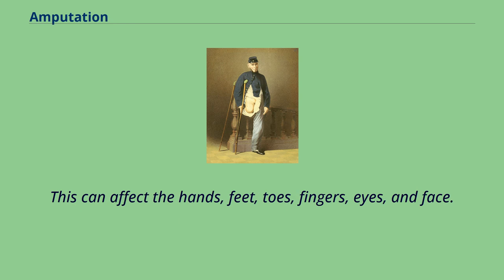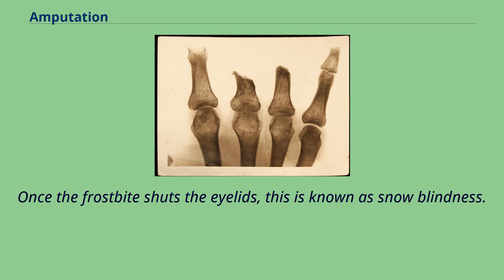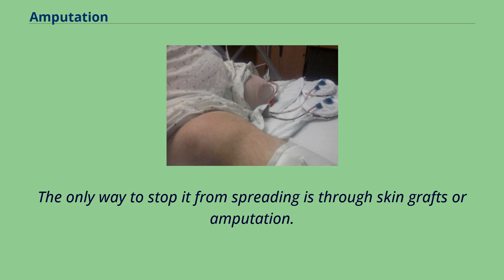Frostbite can affect the hands, feet, toes, fingers, eyes, and face. Once the frostbite shuts the eyelids, this is known as snow blindness. The only way to stop it from spreading is through skin grafts or amputation.